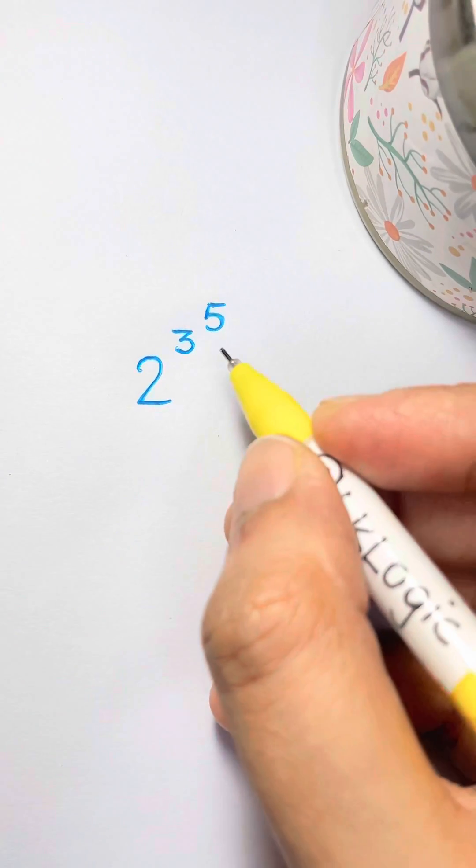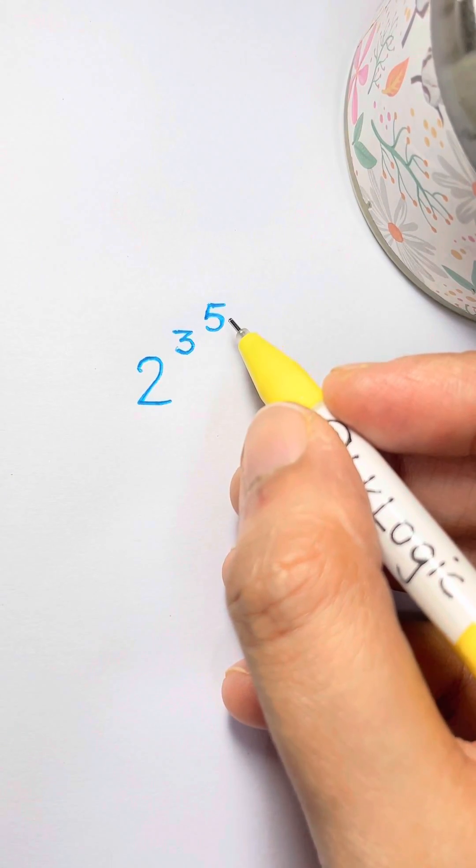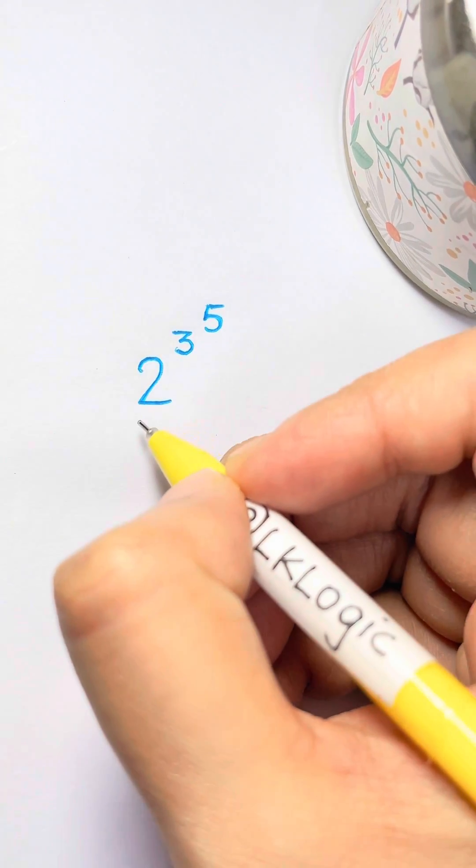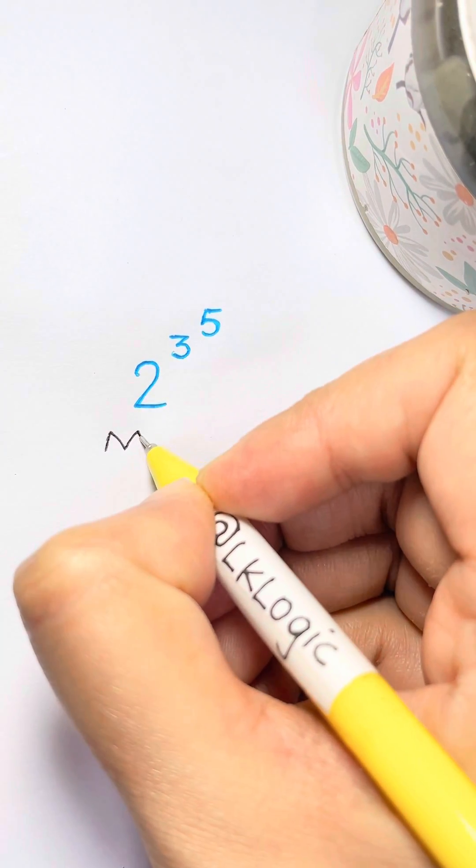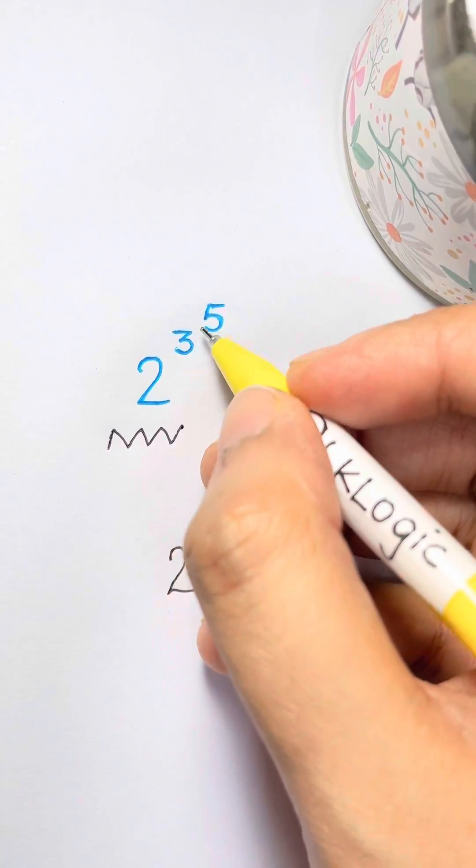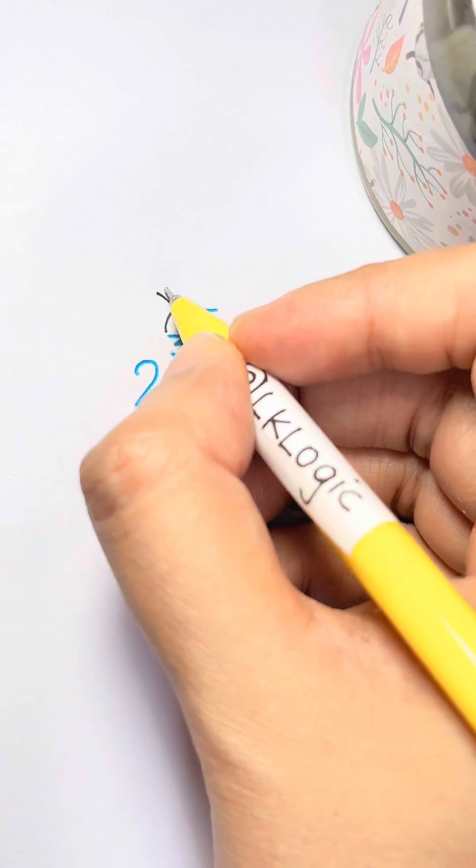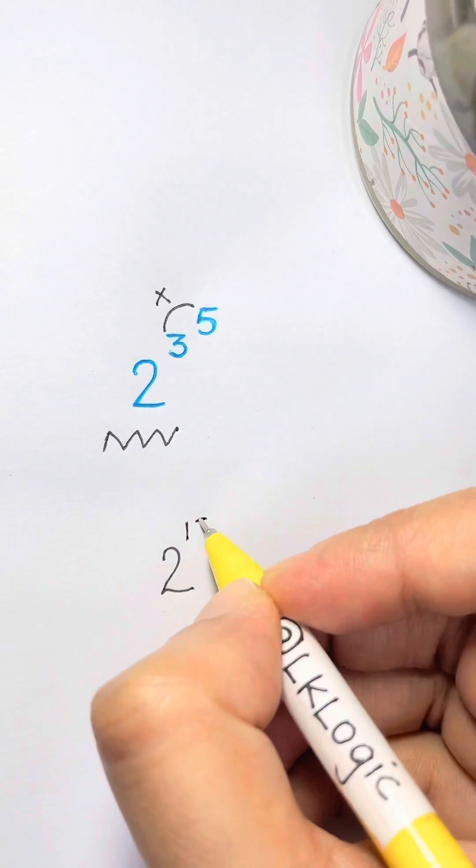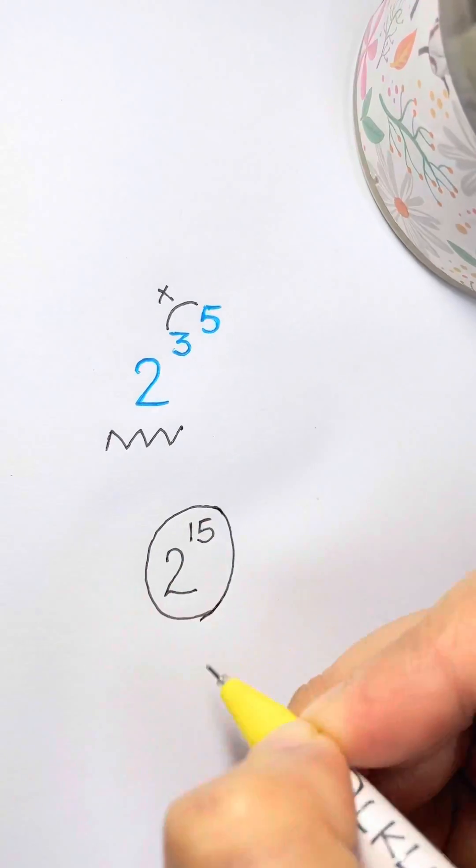Now something's a little different. If you have a power and it's raised to another power, this is pretty easy. All you're gonna do is take your base, copy it over and then take your exponents and multiply them. So 3 times 5 is 15 and 2 to the power of 15 will be your answer.